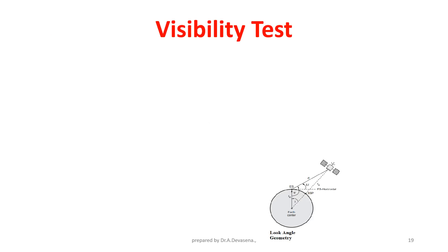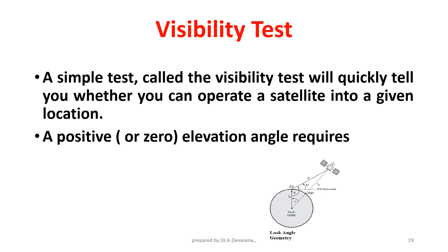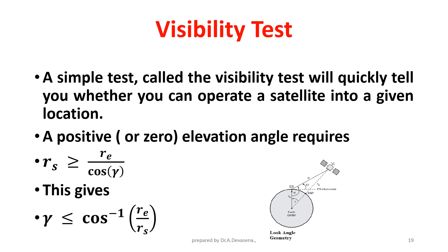Visibility test: a simple visibility test will quickly tell you whether you can operate a satellite into a given location. A positive or zero elevation angle requires R_s ≥ R_e / cos(γ). This gives the condition: γ ≤ cos⁻¹(R_e / R_s).